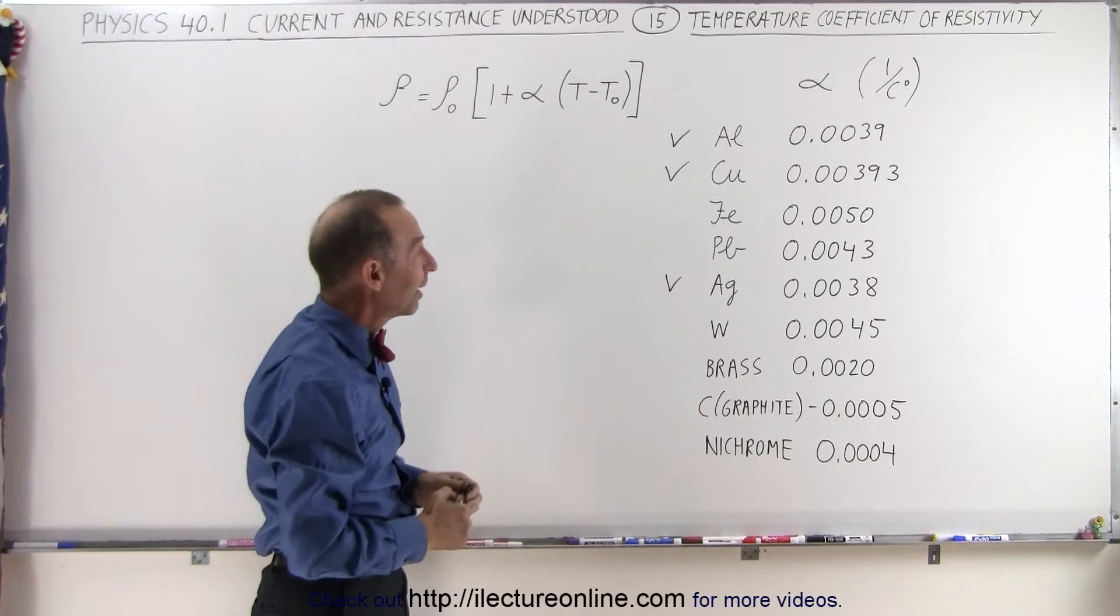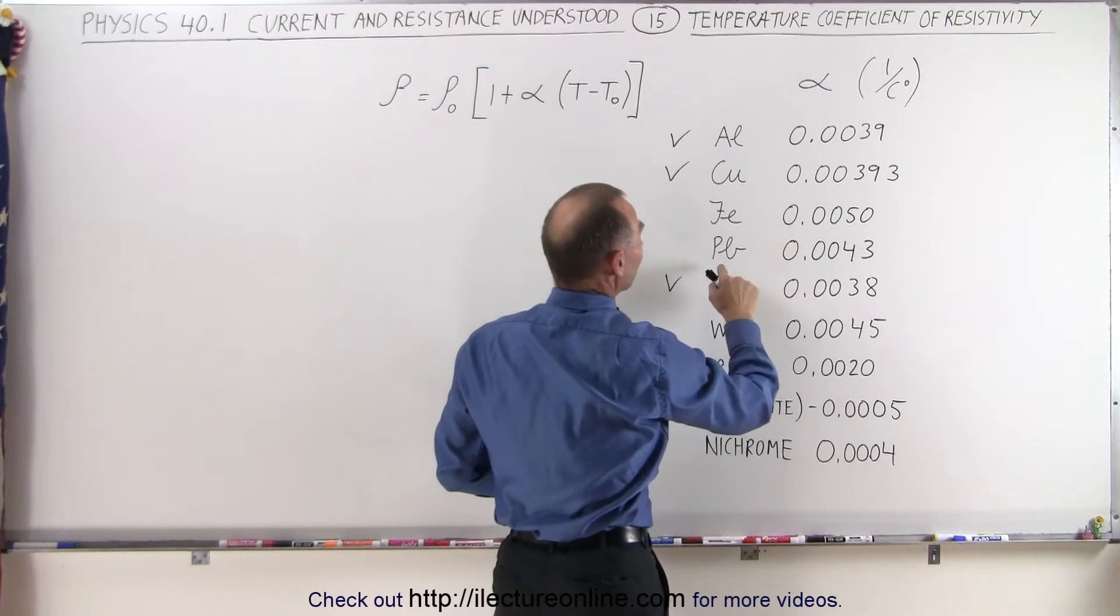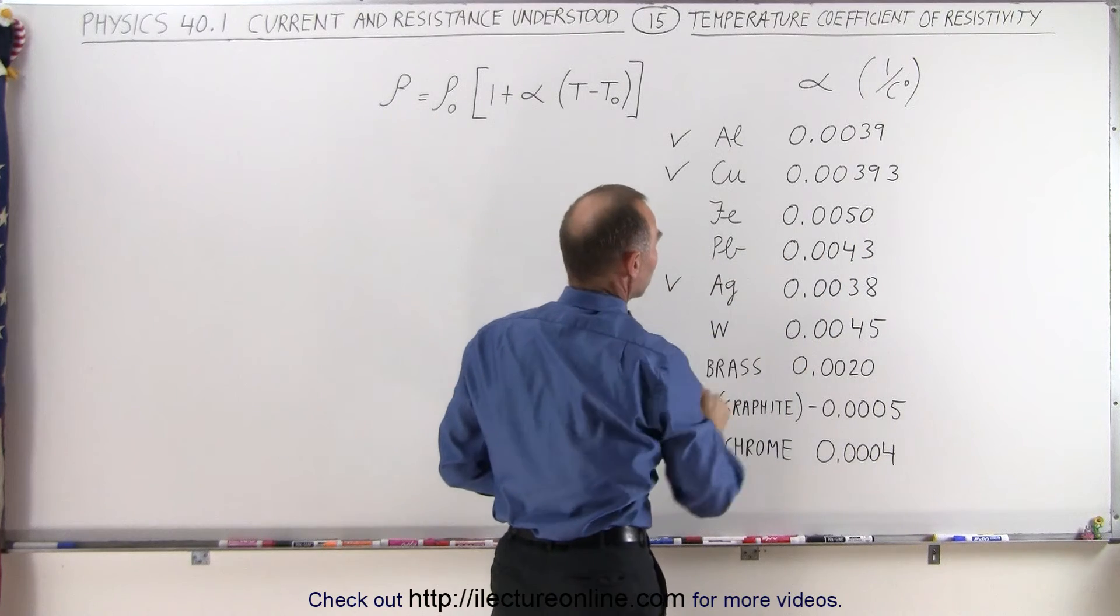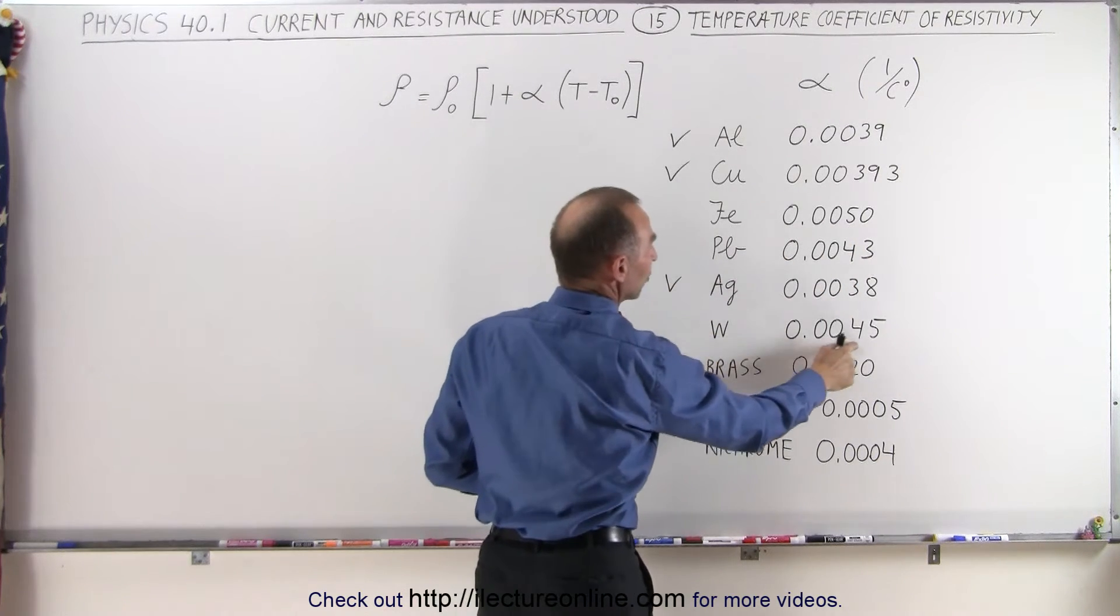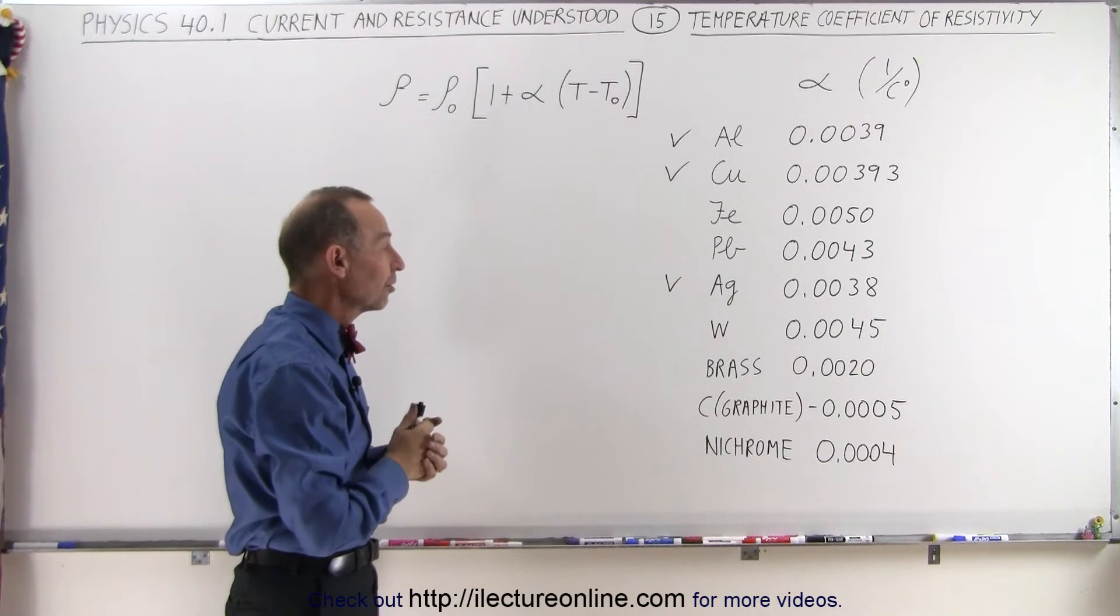And the other metals aren't that far off. For iron it's 0.005, for lead it's 0.0043, and for tungsten is 0.0045, so again not all that different from our other three very good conductors.